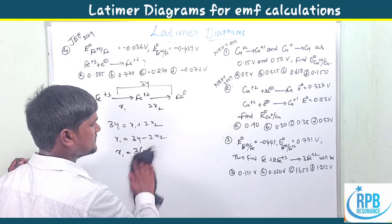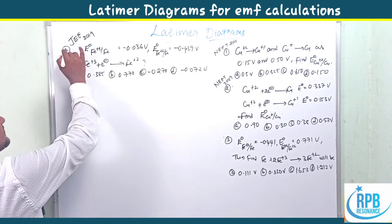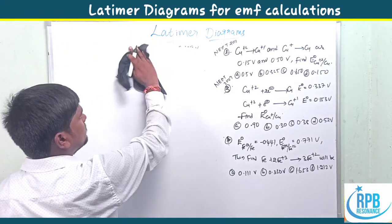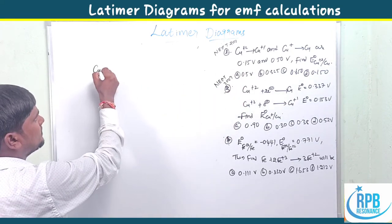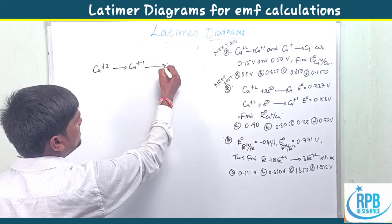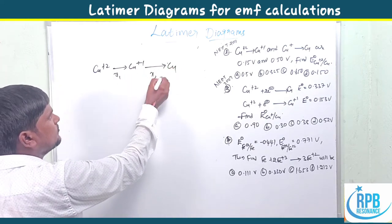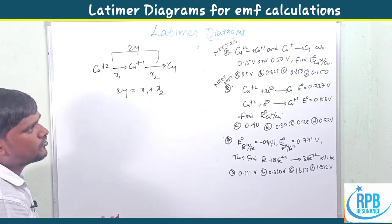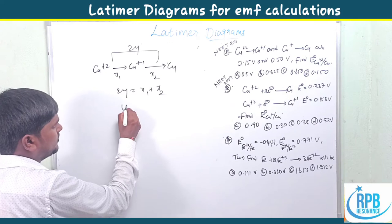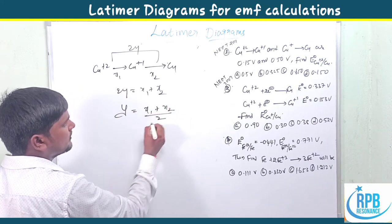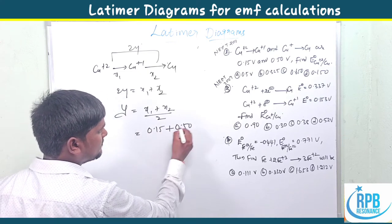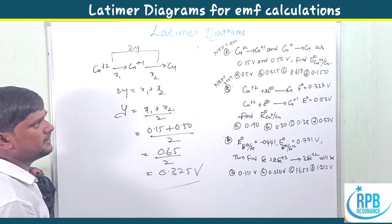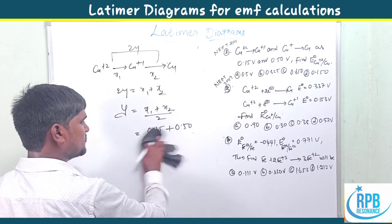Problem 2 (NEET): Given Cu+2 to Cu+1 = 0.515 V and Cu+1 to Cu0 = 0.50 V, find E for Cu+2 to Cu0. Using 2y = x1 + x2, so y = (x1 + x2)/2 = (0.515 + 0.50)/2 = 1.015/2... actually y = (0.515 + 0.50)/2 = 0.325 V... giving 0.325 V. Option B is correct.